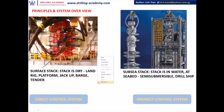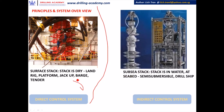Unlike the surface BOP where the BOP is dry on surface — this is surface BOP over here — the surface stack is used in land rig, platform rig, jackup rig, and tender barge rig, and the control system is a direct control system. The Sub-C BOP, as the name is self-explanatory, means the BOP is wet in water at seabed, and thus the control system is indirect. We will examine why it is indirect later. The Sub-C BOP system is the way to go when you drill with floater rigs such as semi-submersible or drillship.